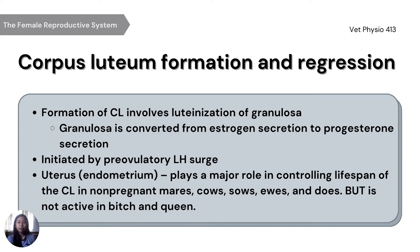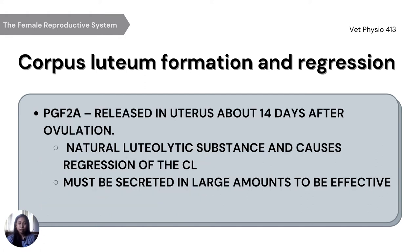Corpus luteum formation involves luteinization of granulosa, where granulosa cells are converted from estrogen secretion to progesterone secretion. It is initiated by the pre-ovulatory luteinizing hormone surge. The uterus or endometrium plays a major role in controlling the lifespan of the corpus luteum in non-pregnant mares, cows, sows, ewes, and does, but is not active in bitch and queen. The prostaglandin F2-alpha released from the uterus about 14 days after ovulation is a natural luteolytic substance and causes regression of the corpus luteum. It must be secreted in large amounts to be effective.